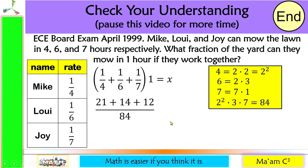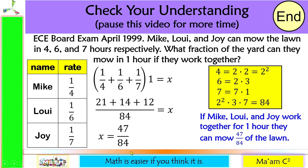So we have 21 plus 14 plus 12 over 84, which equals x. That gives 47 over 84. So if Mike, Louie, and Joy work together for 1 hour, they can finish 47 over 84 of the lawn. Converting to decimal, this is approximately 0.56, or 56% of the lawn completed after 1 hour.